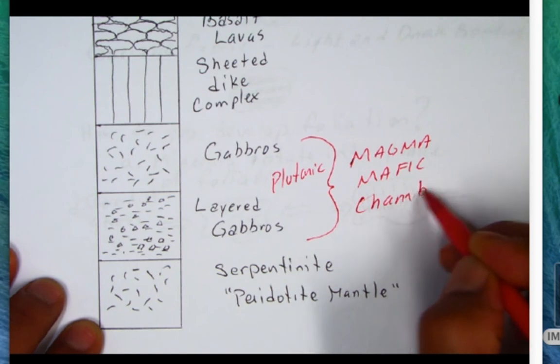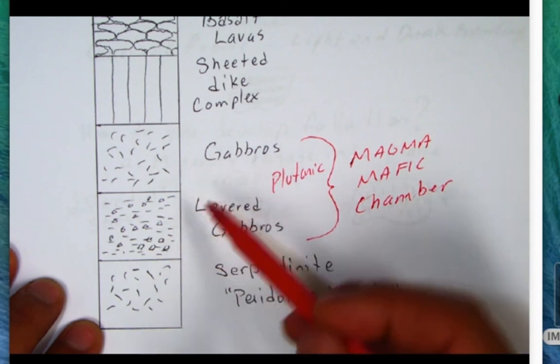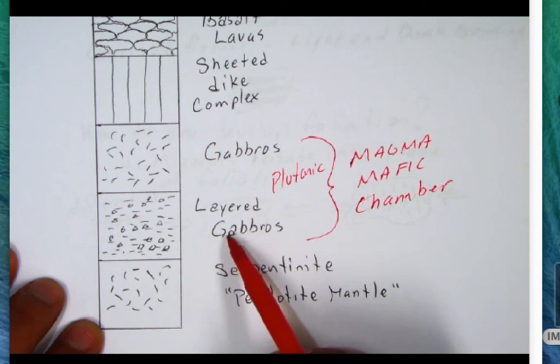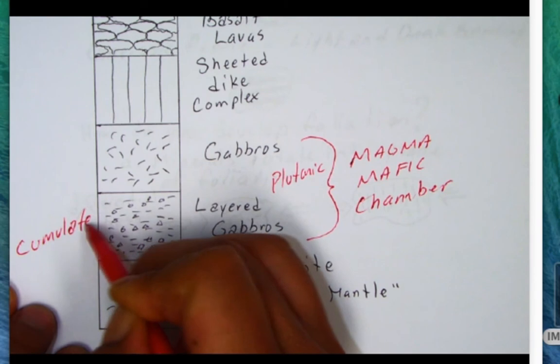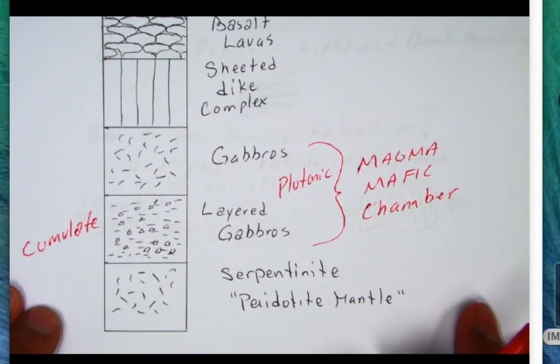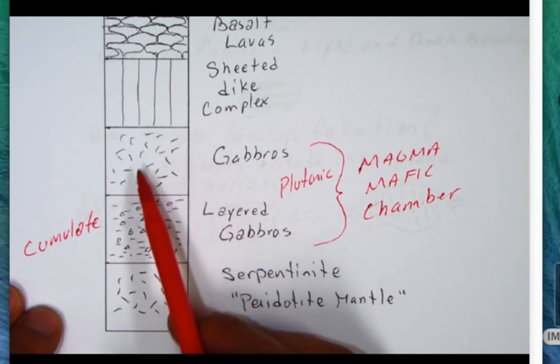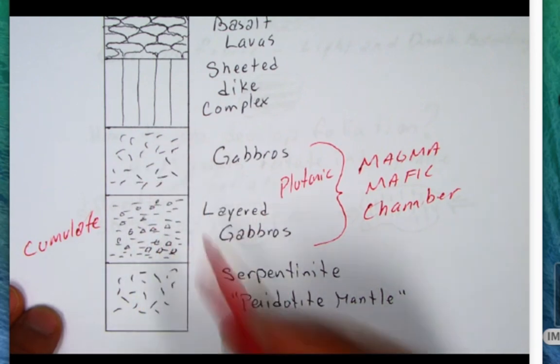In magma chambers when minerals start forming, they'll start to sink to the bottom of the chamber. The layered gabbros represent—in fact we call these cumulates—the cumulates collect down in the bottom of the magma chamber, and then the upper part does not have cumulate, so that's just a regular gabbro.